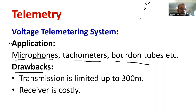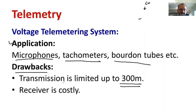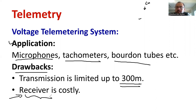What are the setbacks of the voltage telemetry system? The distance of transmission is a major constraint — only up to 300 meters. If you require more than that, you have to depend on a more advanced system. The receiver calibration is very costly and somewhat tricky; more technical knowledge is required. Basically, at the receiving end side the pressure is measured in terms of voltage, so calibration is one of the major challenges.